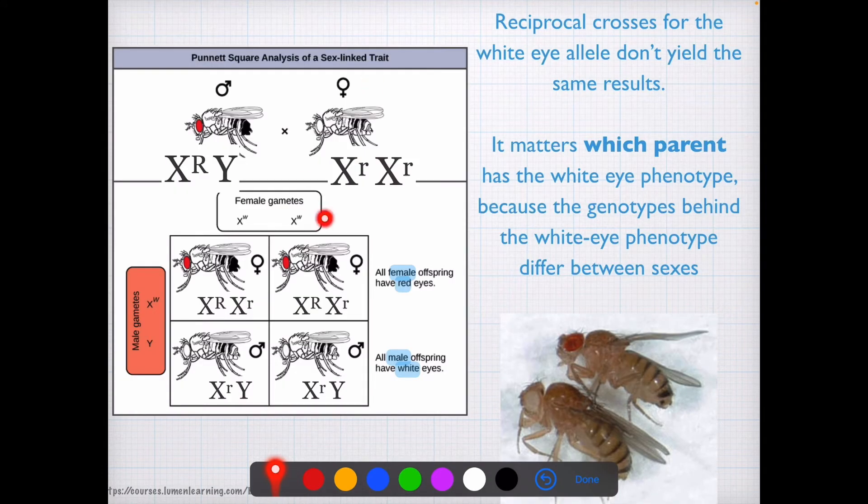And then we have the female parent here, which has white eyes, and the genotype is homozygous. So two alleles for white eyes, which is recessive. And we get the cross.